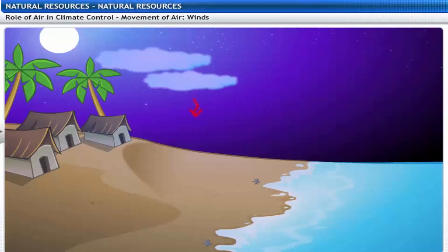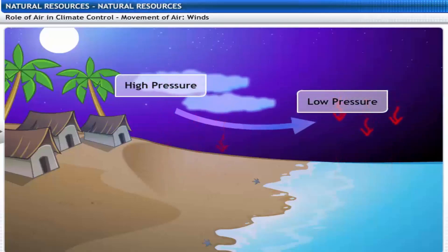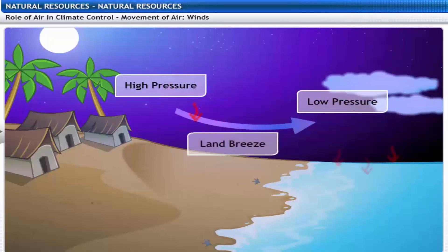At night, since soil cools faster than water, the air above the land is cooler than the air above the sea. This causes air to move from a high pressure area over the land to a low pressure area over the sea, creating a land breeze.